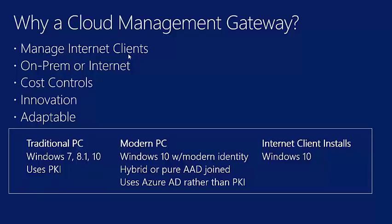The way on-prem vs. internet detection works: if a client can access a domain controller, or if it can access an on-prem management point, then that client is considered to be on the intranet. There have been questions about why the client control panel shows 'internet' when a device is actually on-prem — this automatic detection logic explains how that determination is made.